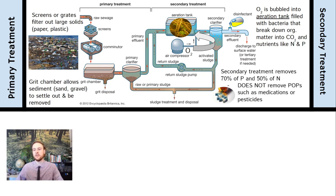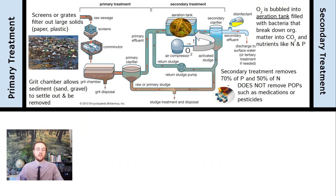It's important to note that only 70% of phosphorus and only about 50% of nitrogen is removed by secondary treatment. So while it helps reduce nutrient levels a lot, it won't entirely remove them. Secondary treatment also won't remove persistent organic pollutants at all, because these compounds are not easily digestible or broken down by microbial activity. That means pesticides and leftover organic pollutants from medications that pass through human bodies will still be in the water even after secondary treatment.